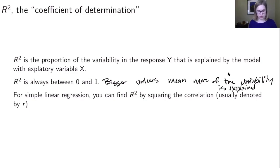And for simple linear regression, which is all we're doing in this class, that's when we just have one predictor. You can find R squared, big R squared, the coefficient of determination, by squaring the correlation. So for simple linear regression, R squared, the coefficient of determination, is equal to little r, which is correlation, squared. So you can just take the correlation and square it.